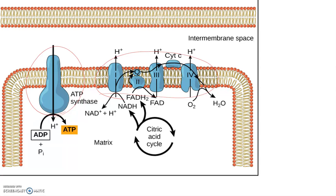The citric acid cycle was occurring in the matrix, so the electron carriers NADH and FADH2 were generated there. The NADH produced during glycolysis in the cytoplasm is shuttled by the cell into the mitochondrial matrix so it can also drop its electrons off to the electron transport chain. The electrons passed through the electron transport chain generate the proton gradient; oxygen serves as the final acceptor producing water; and the gradient drives ATP production as protons flow back through ATP synthase. This entire process is called oxidative phosphorylation or chemiosmotic phosphorylation.